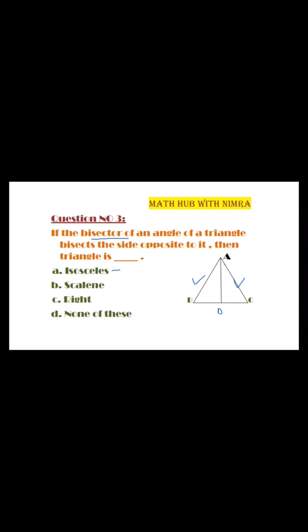And one is different. Now come across the second option, scalene. In a scalene triangle, the length of three sides are different. Third option is right triangle. In a right triangle, one angle is 90 degrees.